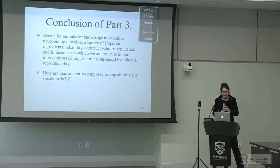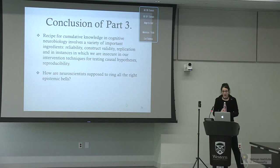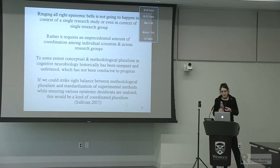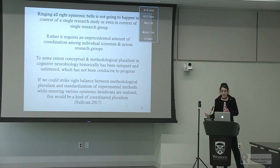My conclusion is that the recipe for cumulative knowledge in cognitive neurobiology involves a variety of important ingredients. Ringing all the right epistemic bells is not going to happen in the context of a single research study or even a single research group—rather, it requires an unprecedented amount of coordination among individual scientists and across research groups. Conceptual and methodological pluralism in cognitive neurobiology historically has been rampant and unfettered, which I think is not conducive to progress, which is why I've suggested that what we need is coordinated pluralism.